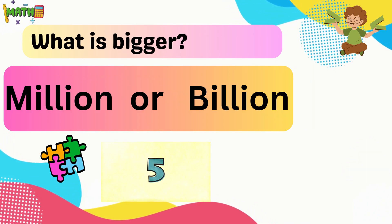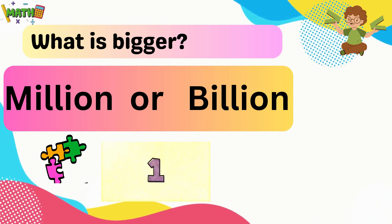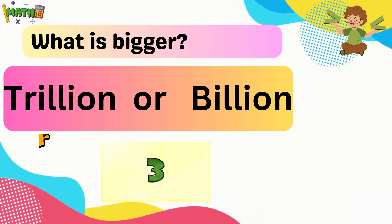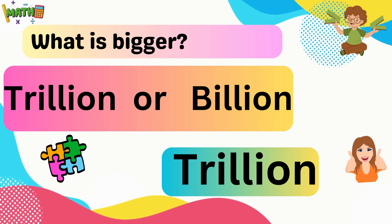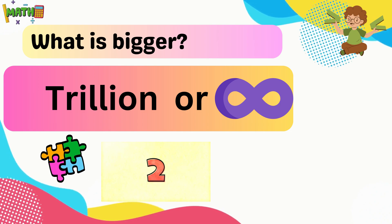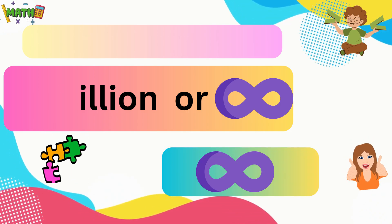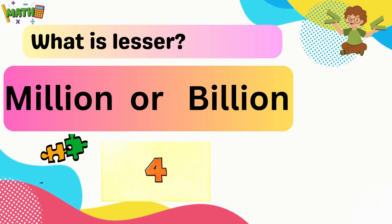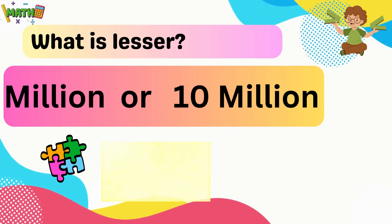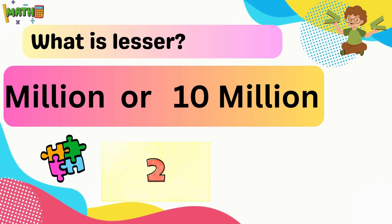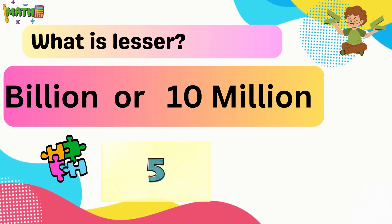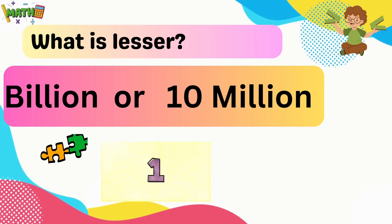What is bigger: million or billion? — Billion. What is bigger: trillion or billion? — Trillion. What is bigger: trillion or infinity? — Infinity. What is lesser: million or billion? — Million. What is lesser: million or ten million? — Million. What is lesser: billion or ten million? — Ten million.